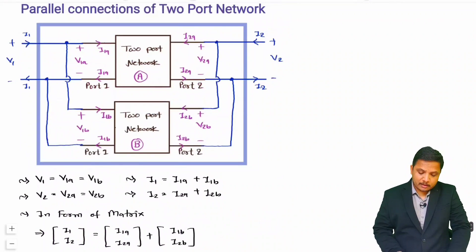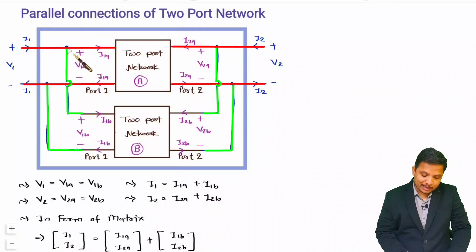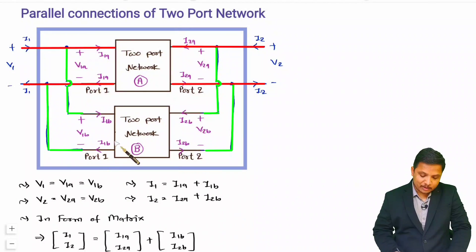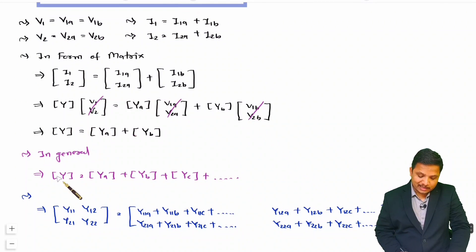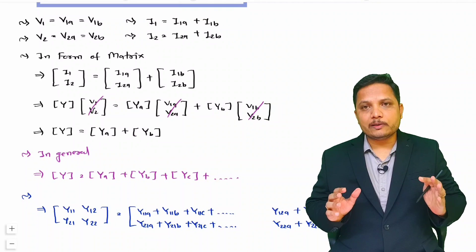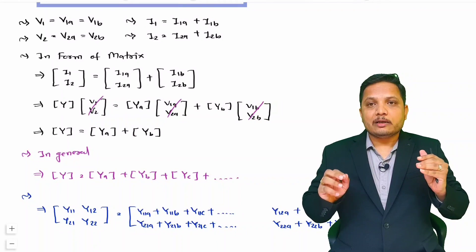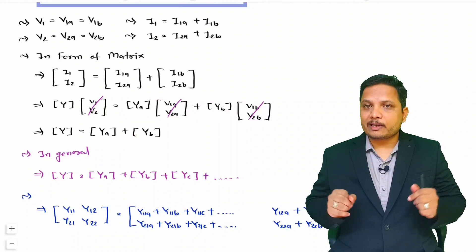To summarize: for parallel connection of two-port networks, the terminals at both ports must be connected in parallel, and the resultant Y matrix is simply the algebraic sum of the Y matrices of the individual two-port networks. This is how we identify the resultant two-port network for a parallel connection.